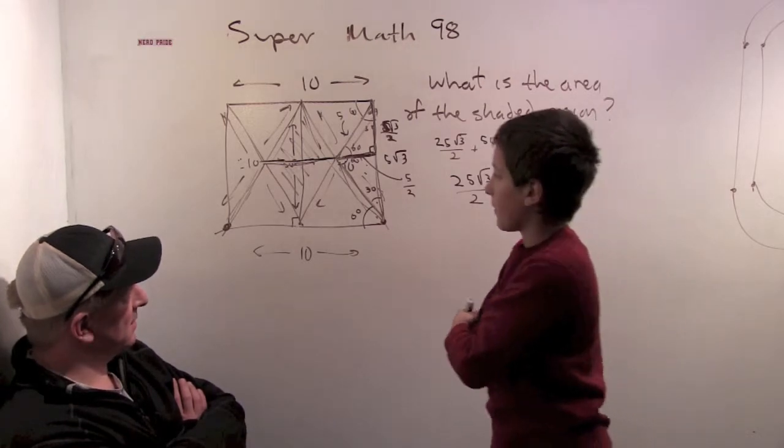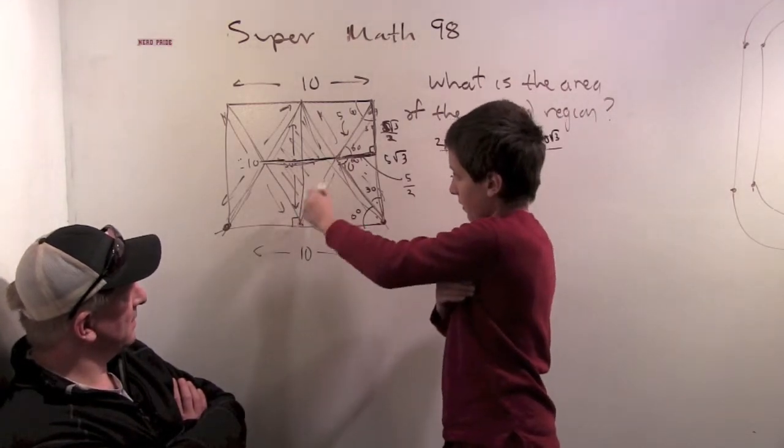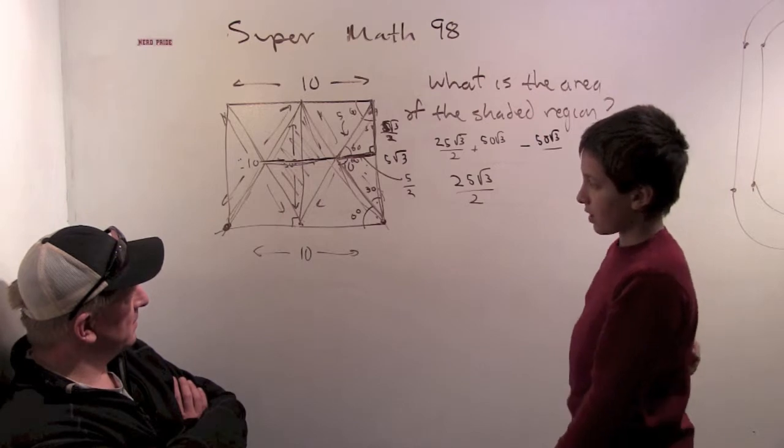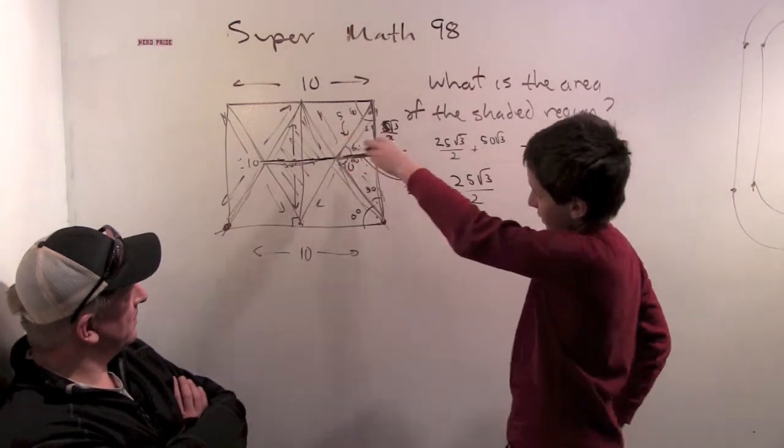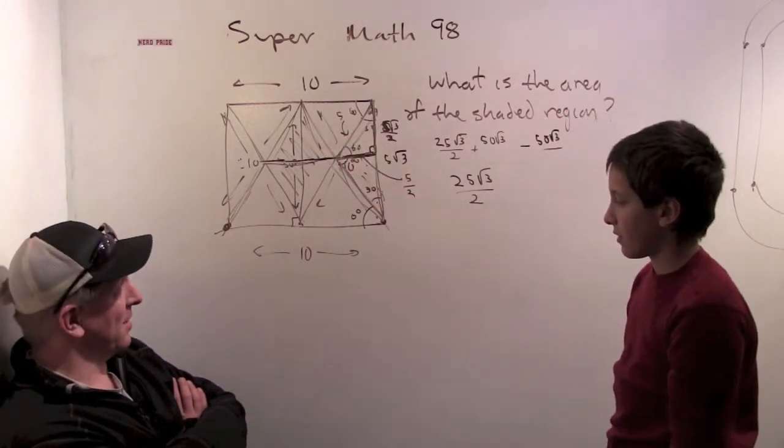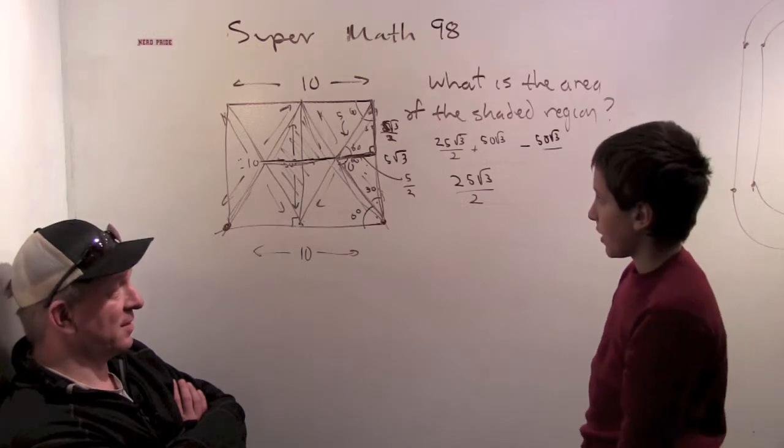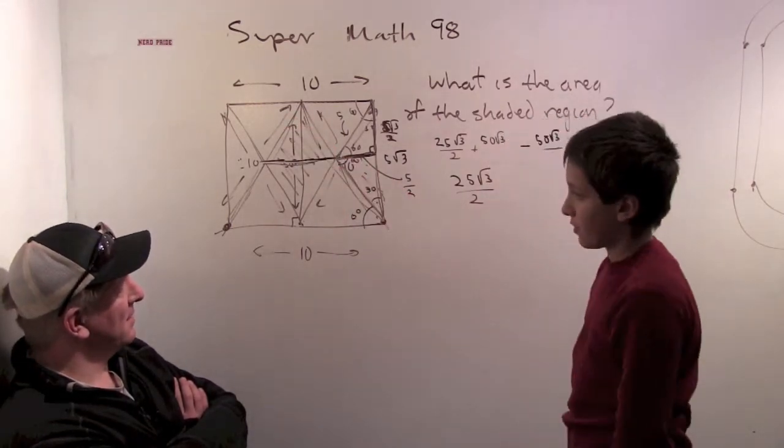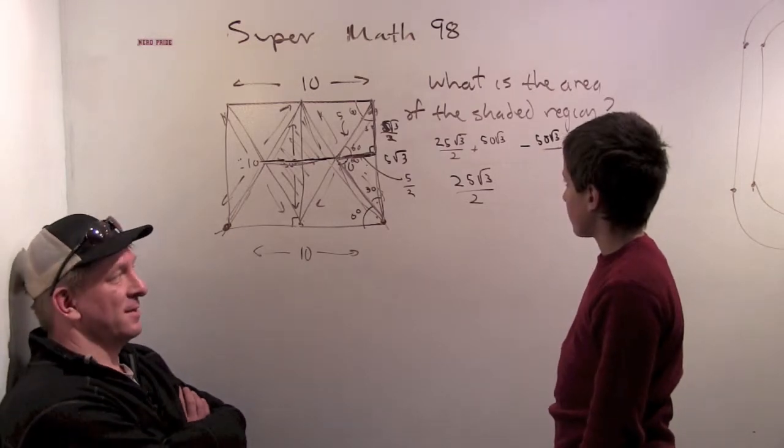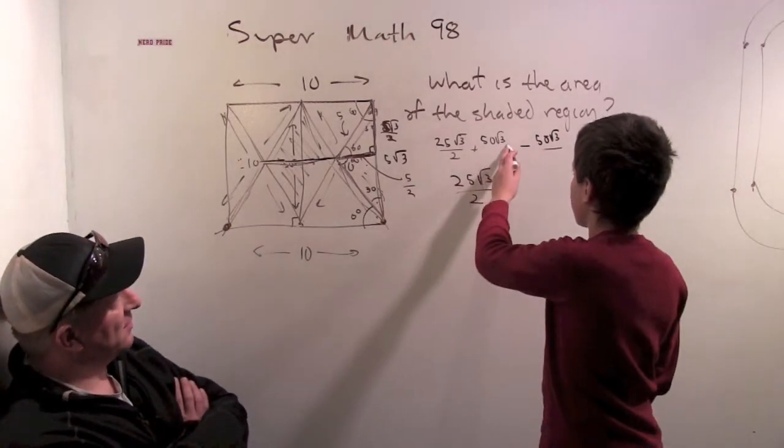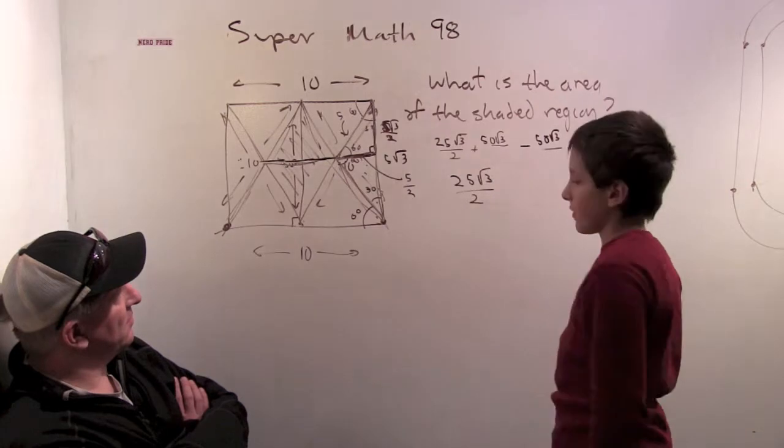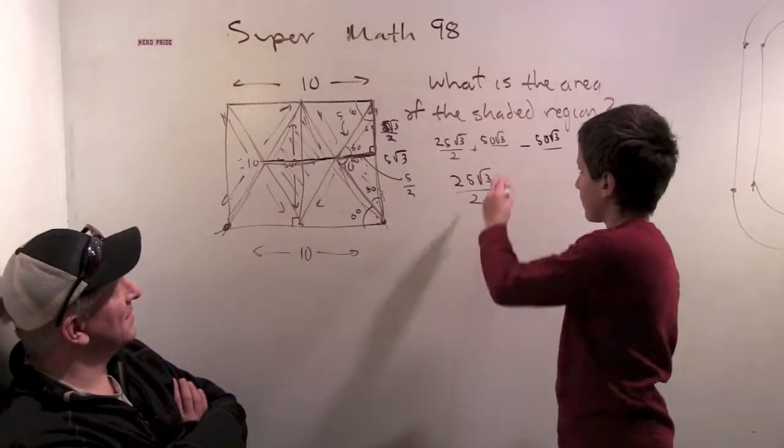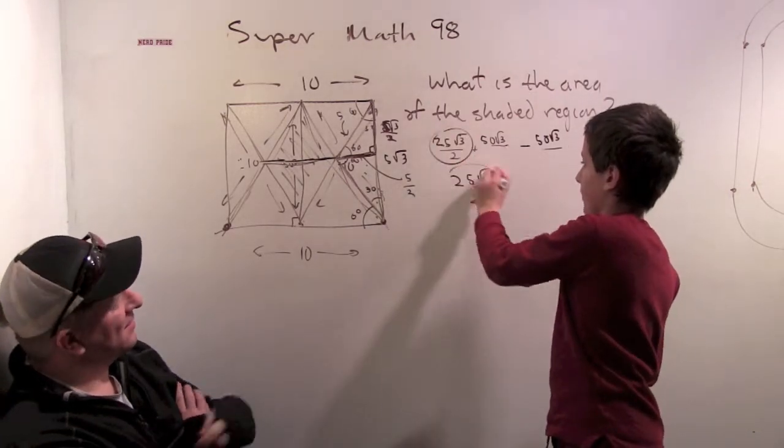But if we found out what the area of that was... the top bit looks like it's a quarter of the area of the equilateral triangle. So what would the area of the rhombus be then? It would be half of the area of the equilateral triangle. What was the area of the equilateral triangle? It was 25 root 3. So it is 25 root 3 over 2.